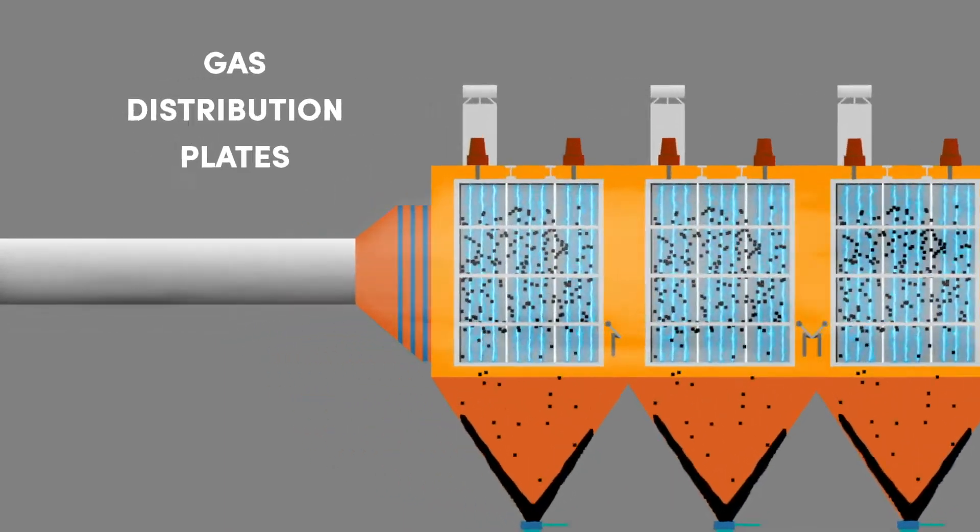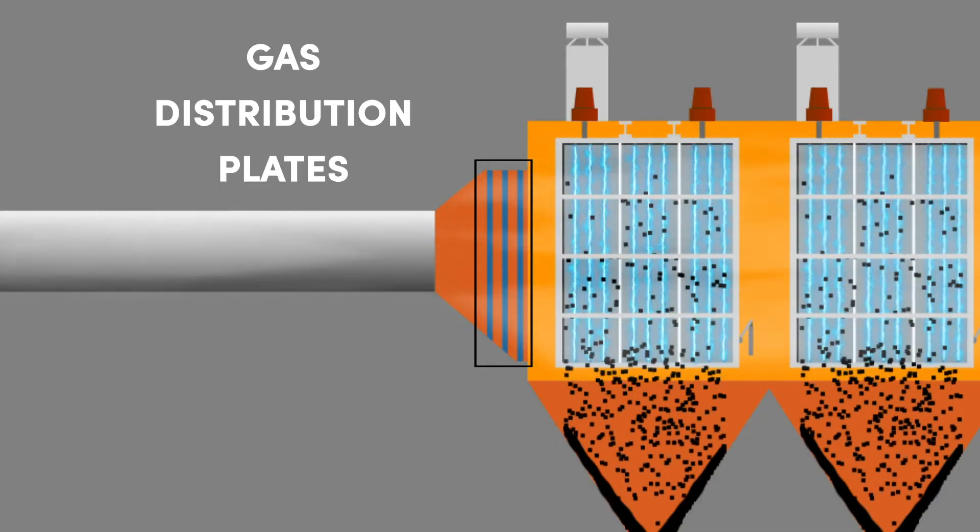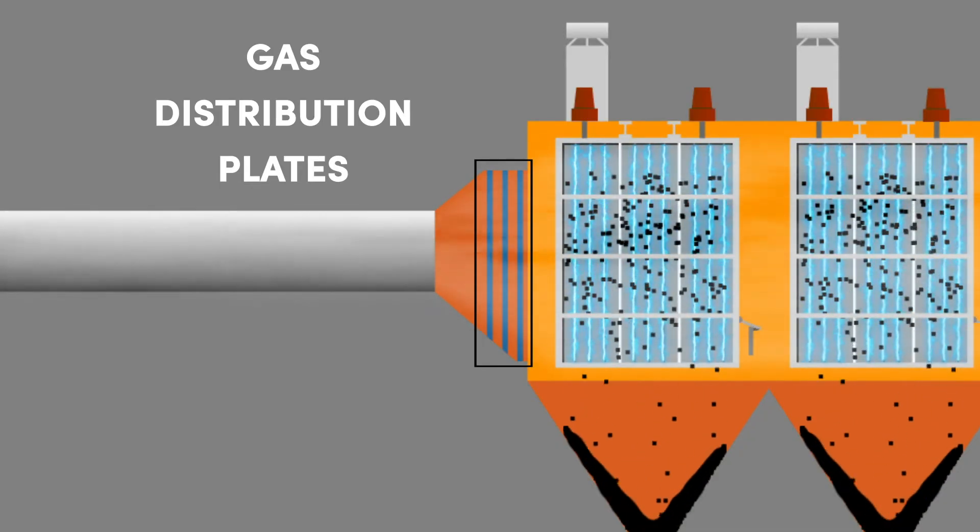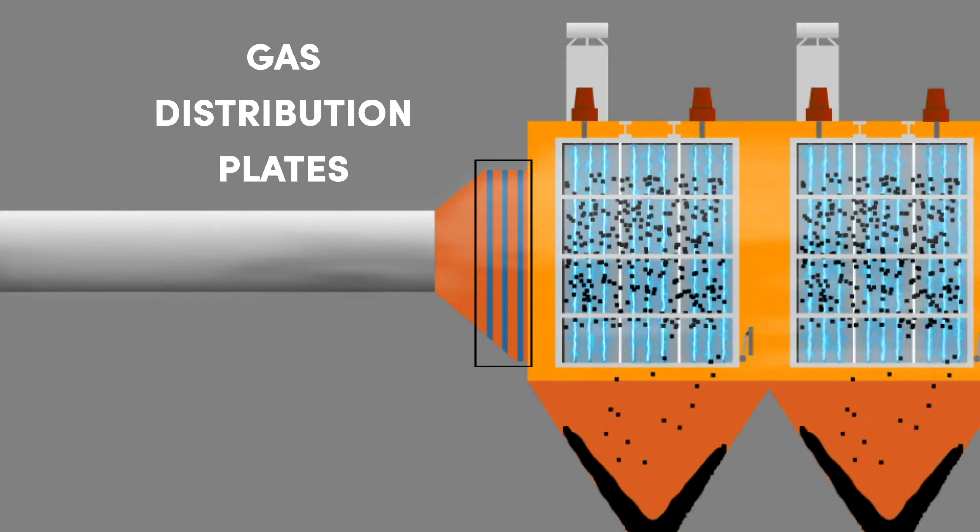The gas distribution plates consist of several perforated plates which help maintain proper flow distribution of the entering gas stream.